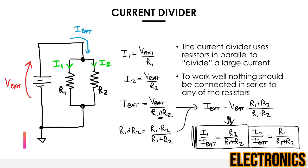These current divider equations are similar to the voltage divider but with a fundamental difference. In a voltage divider, the percentage of v_bat falling on r1 is r1/(r1+r2). In the current divider, the portion of i_bat going into r1 is r2/(r1+r2) — the other resistor appears in the numerator. Similarly, the current into r2 is r1/(r1+r2). This is the opposite of the voltage case.